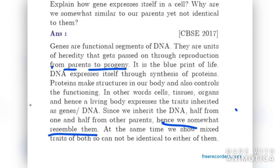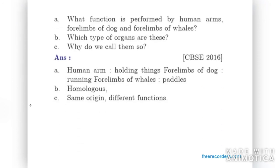What function is performed by human arms, four limbs of a dog, and four limbs of whales? Human arms are used for holding things, dog limbs for running, and whale limbs for paddling. These are homologous organs because they share the same origin but perform different functions — that is why we call them homologous.